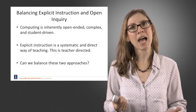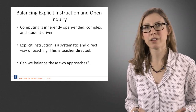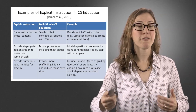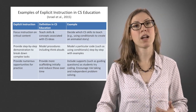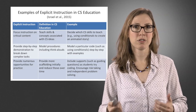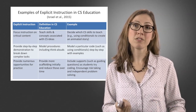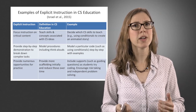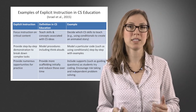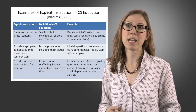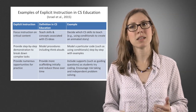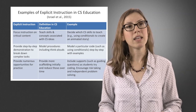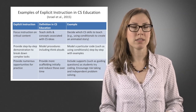We're studying how to balance these approaches together. Archer and Hughes in 2011 came up with a list of about 15 different kinds of explicit instruction processes. Here are just three: focusing instruction on critical content and being explicit about what we want to teach; providing step-by-step demonstrations of how to break down complex tasks; and having numerous opportunities for practice.